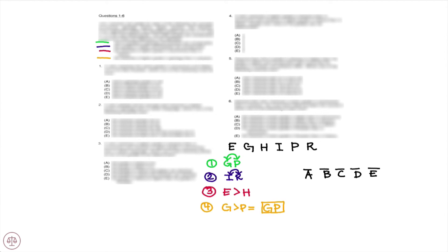The consecutive pairs can only be A/B, B/C, C/D, or D/E. From rule four, physics can't get an A, because geology must be higher. And geology can't be an E, because geology is better than physics and they're consecutive. Likewise from rule three, history cannot get an A because economics must be higher, and economics cannot be an E because it must be better than history. We can't make any deductions about Italian and Russian — we just know they are different, consecutive grades.